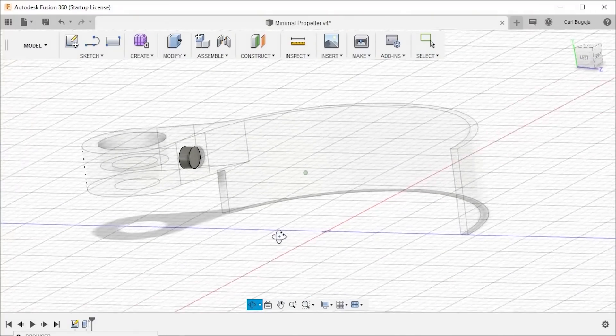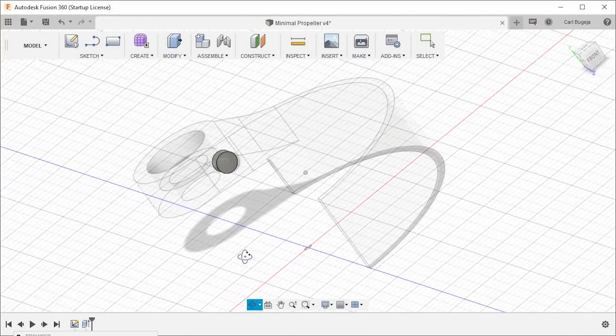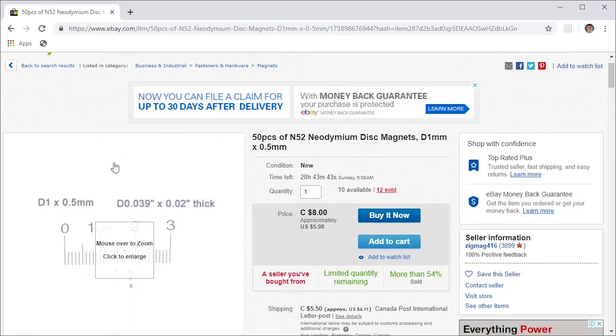One application for these magnets would be embedding them into 3D prints and maybe using them as a seamless magnetic lock. So I hope you enjoyed this quick little video. If you want to buy these magnets, I have put the link in the description so that you can take a closer look at them. See you in the next video.